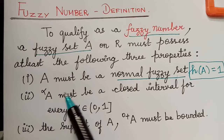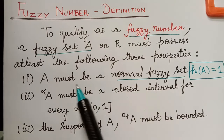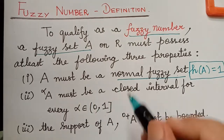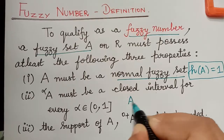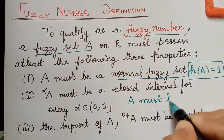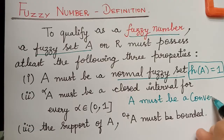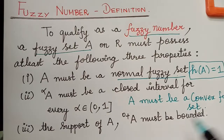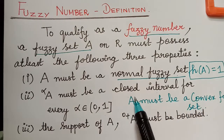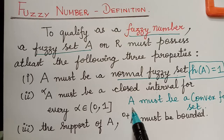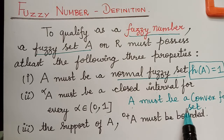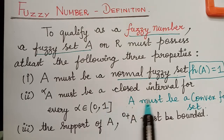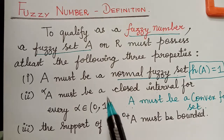Those elements must be in a closed interval. We can also say that the fuzzy set A must be a convex fuzzy set. A fuzzy set A is convex if all its alpha cuts are convex. We shall understand this better when we deal with an example for this definition.